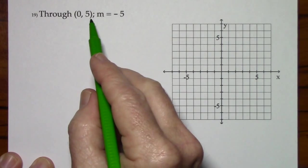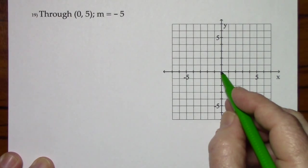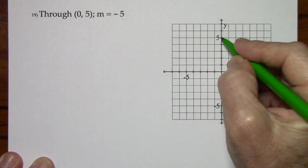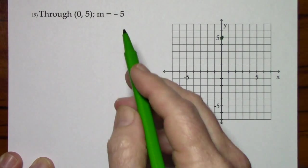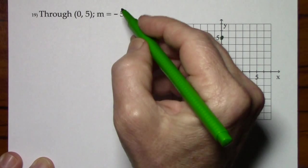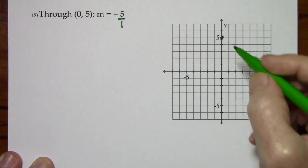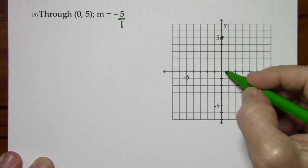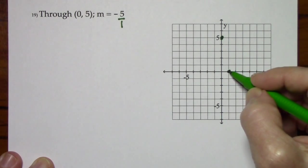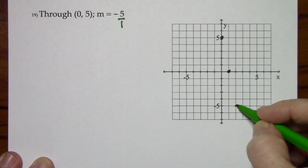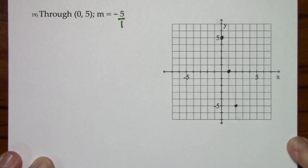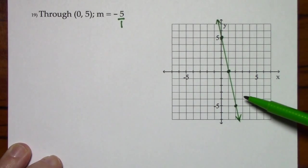And finally, 0, 5, no back and forth, just up 5. The slope is negative 5. If you want to see this as a fraction, you just put it over a 1. So that's down 5 over 1, down 5 over 1, and you can draw a line. There's the solution.